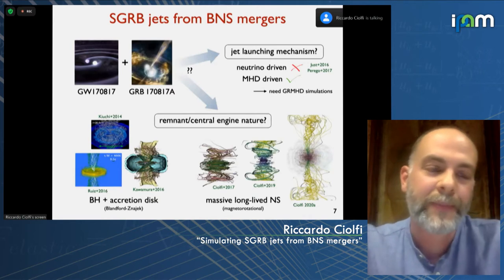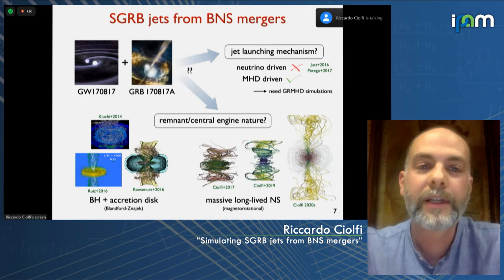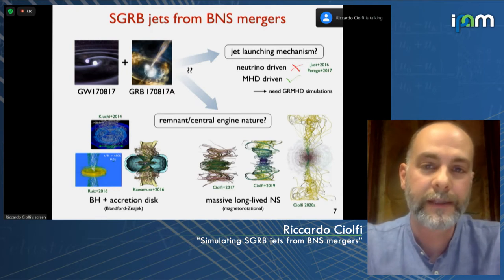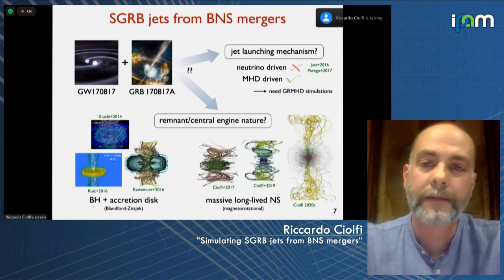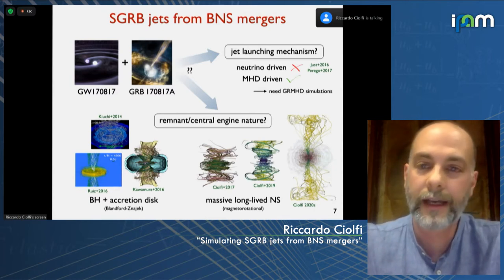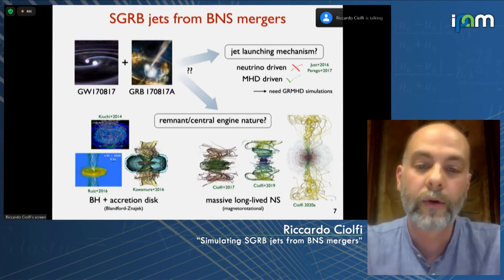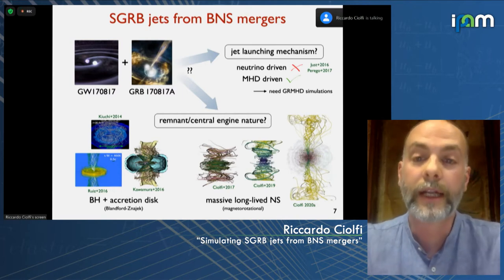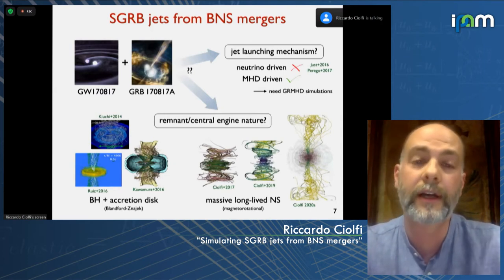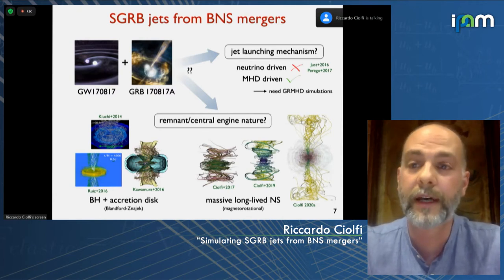This was indeed confirmation that binary star mergers can make short gamma-ray bursts — a great accomplishment, but it left behind very important open questions. We still don't know how exactly binary star mergers launch a relativistic jet in the first place, and we don't know the exact mechanism. The observation also cannot tell us whether the engine that launched the jet was an accreting black hole or a massive long-lived neutron star remnant. This is where numerical relativity simulations become crucial.